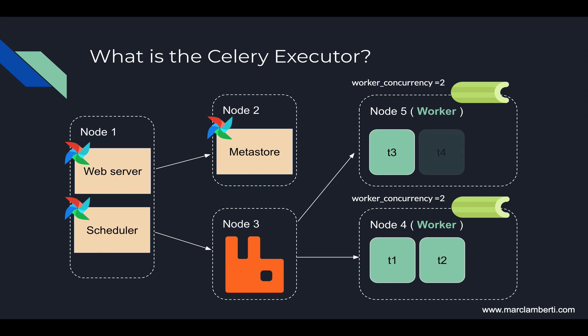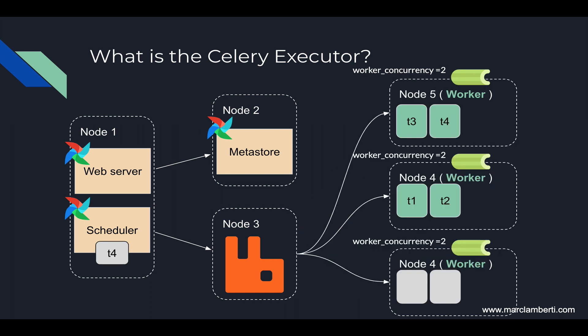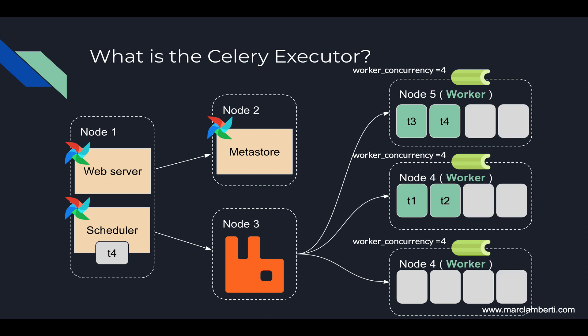If we would like to execute more tasks simultaneously, we would need to add a new worker, as well as increasing the number of parallel processes per worker by changing the worker_concurrency parameter. Here we can execute up to six tasks since we have three nodes. Now let's say each worker node has four CPU cores and we set worker_concurrency to four — now 12 tasks can be executed in parallel.